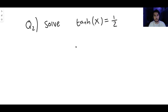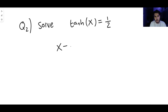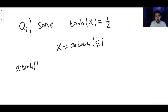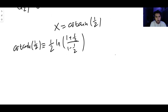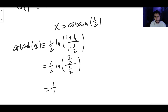Next, we're going to solve the equation tanh x equals a half. We do the same thing: taking the inverse tanh of both sides we get x equals artanh of a half. We recall that artanh of a half equals one half times the natural log of one plus a half over one minus a half. One plus a half is three halves and one minus a half is a half.